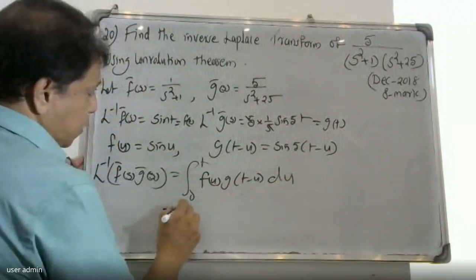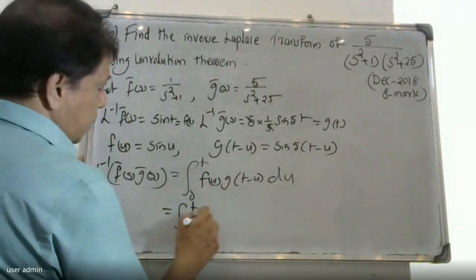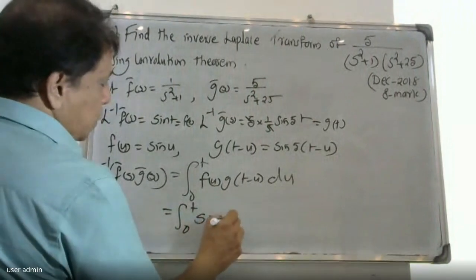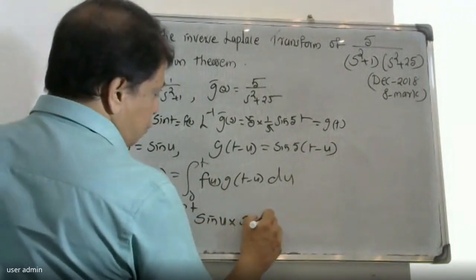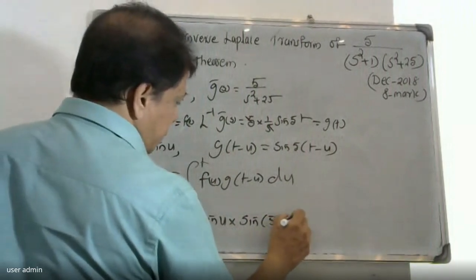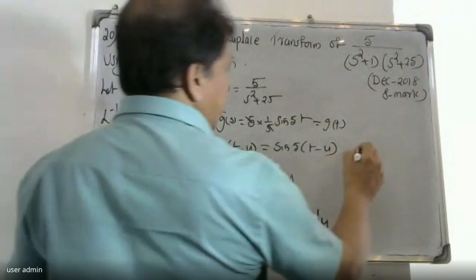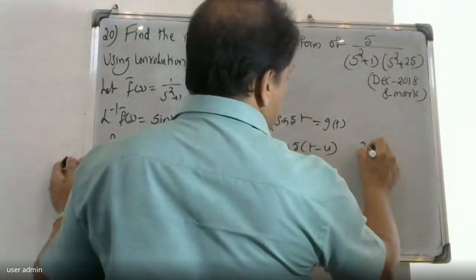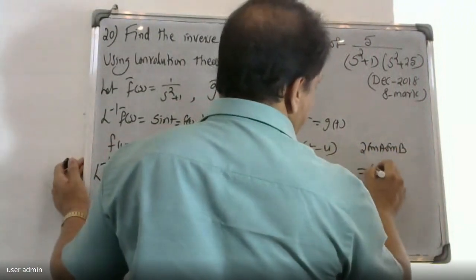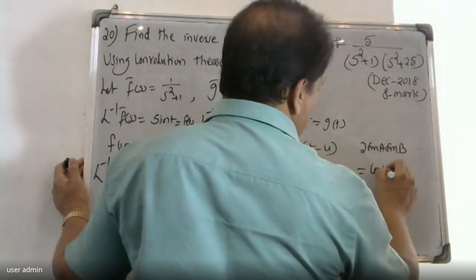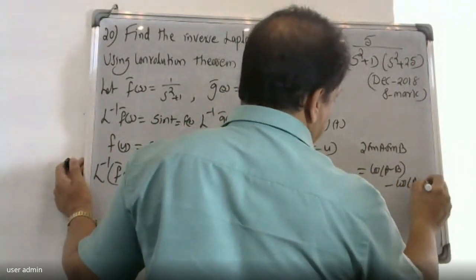We have seen that we can combine f(u) and g(t−u). Using the trigonometric identity: 2 sin A · sin B equals cos(A−B) minus cos(A+B).